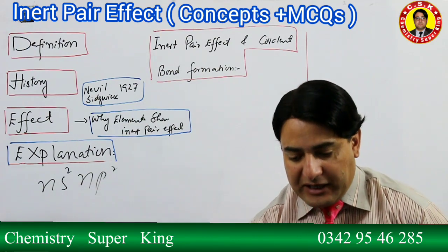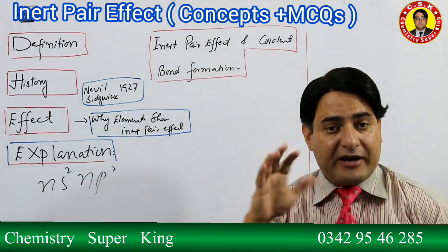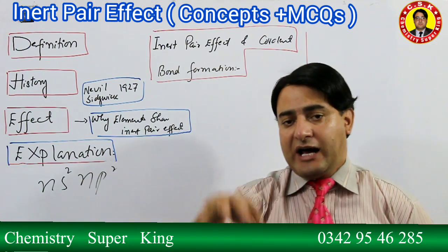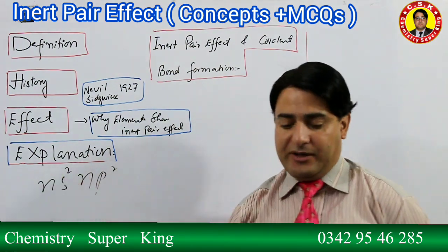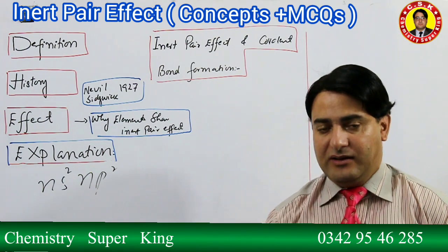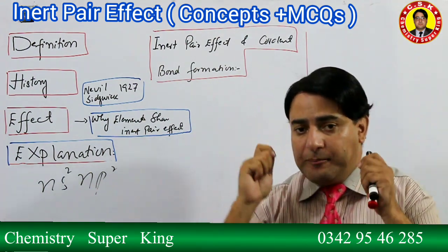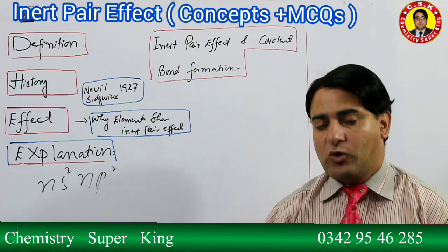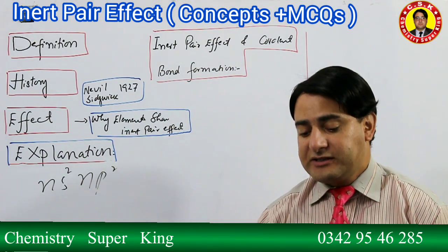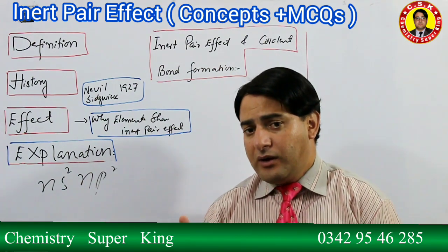If the Inert Pair Effect does not occur, all four electrons - s and p - participate in bonding. The compound formed is covalent and the element shows a +4 oxidation state. The Inert Pair Effect phenomenon does not occur at all in Carbon and Silicon.